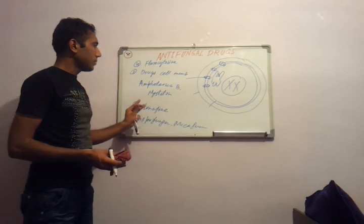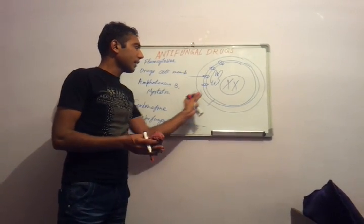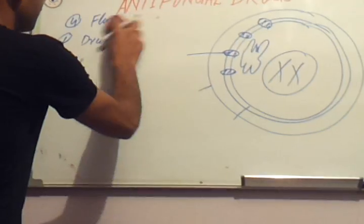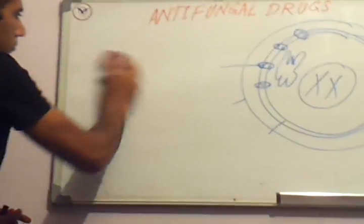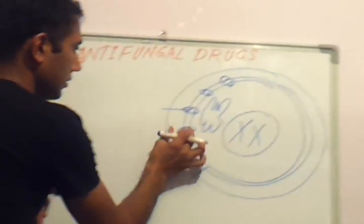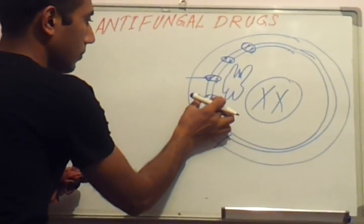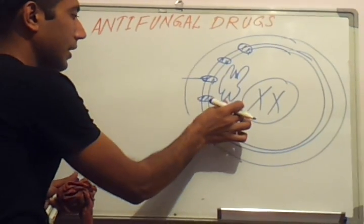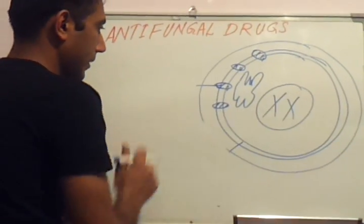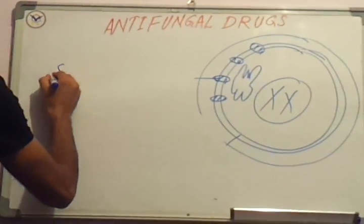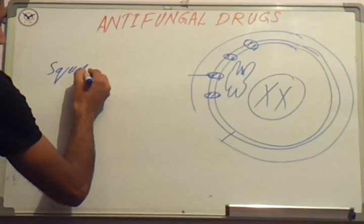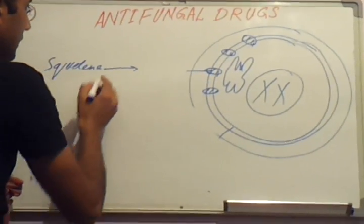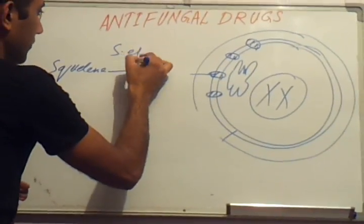Next, the mechanism of action of these drugs — how they act on fungal cells and destroy them. First, I will explain the synthesis of the ergosterol molecule. Ergosterol is synthesized inside the cytoplasm of fungi. Inside the cytoplasm there is a molecule called squalene. On the surface of the squalene molecule, an enzyme called squalene epoxidase acts.